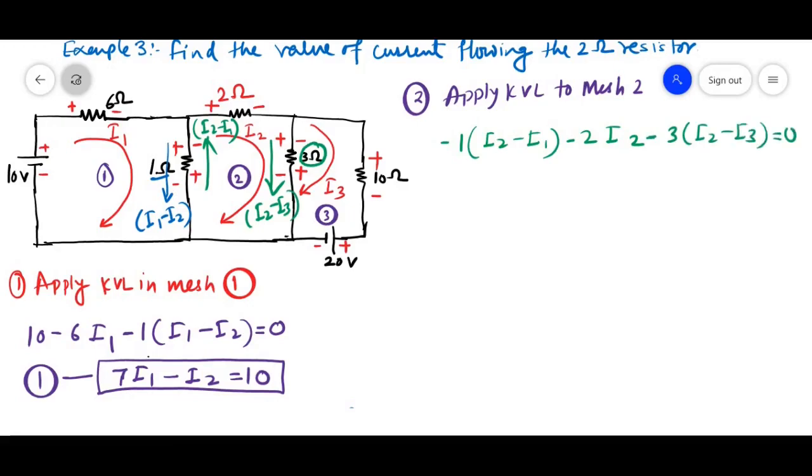So, we will write it minus 3 times I2 minus I3 equal to 0. We will get minus I1 plus 6 I2 minus 3 I3 equal to 0. This is our second equation.